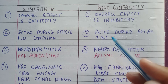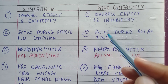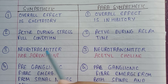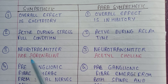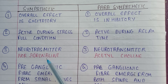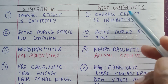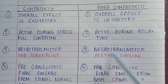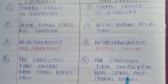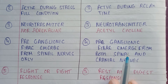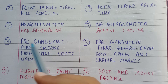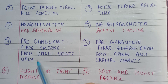When you are relaxing at home watching television, the parasympathetic nervous system is working. The next point of difference is the neurotransmitter. In the sympathetic nervous system the neurotransmitter is noradrenaline, whereas in the parasympathetic nervous system it is acetylcholine.